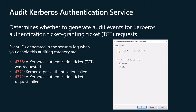Microsoft also recommends failure auditing because you will see all failed requests with wrong password, username, revoked certificate, and so on. You will also be able to detect Kerberos issues or possible attack attempts. Event IDs generated in the security log when you enable this auditing category are: 4768 - a Kerberos authentication ticket (TGT) was requested; 4771 - Kerberos pre-authentication failed; 4772 - a Kerberos authentication ticket request failed.